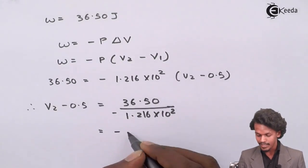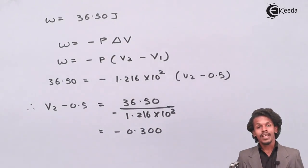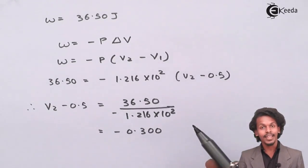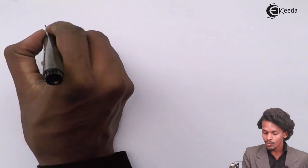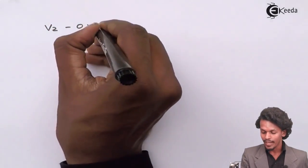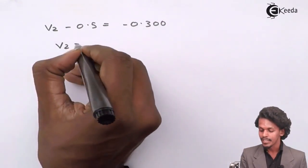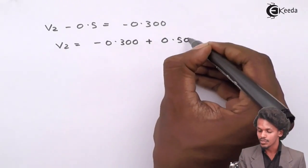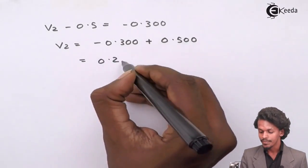We have got an answer as -0.300. When I substitute the value of 0.5 over there, this will be converted to plus 0.5. So V₂ - 0.5 equals -0.300, which can be written as -0.300 + 0.500. So ultimately I will get an answer as 0.2 liters.